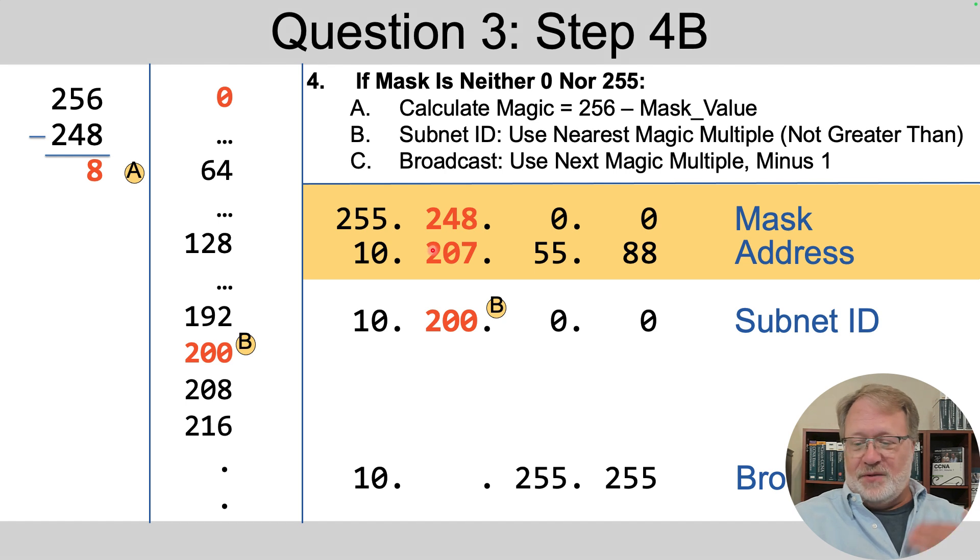Well, 208 is over 207. It's greater than, so that's not good. We want the one that's closest without going over. So that's, of course, 200. So 10.200.0.0 is your subnet ID.